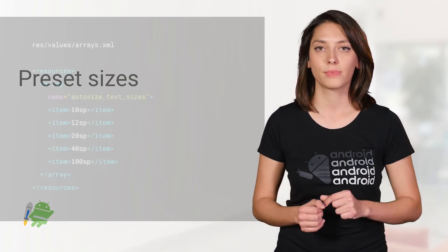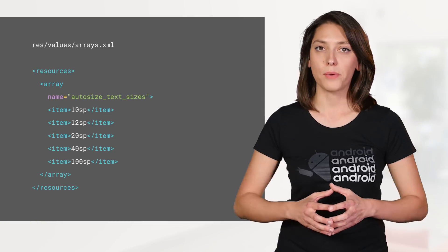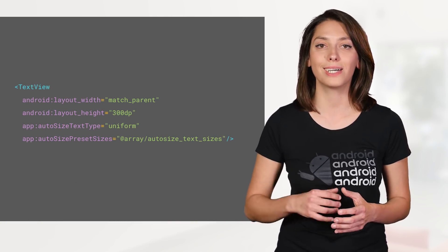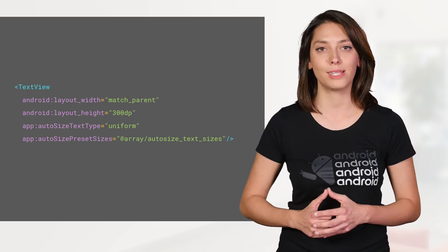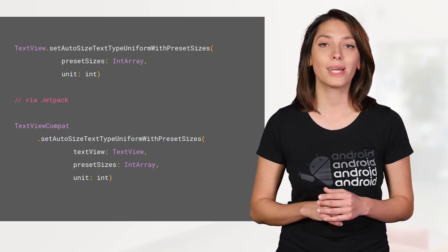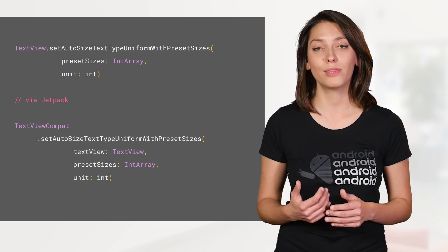To have more control over the final size — for example, if your app needs to comply with specific text size design guidelines — you can provide a list of sizes, and it will use the largest one that fits. Create an array with the sizes in your resources, and then set the AutoSizePresetSizes attribute in the XML. Or do this in code by providing an array of preset sizes and their unit.